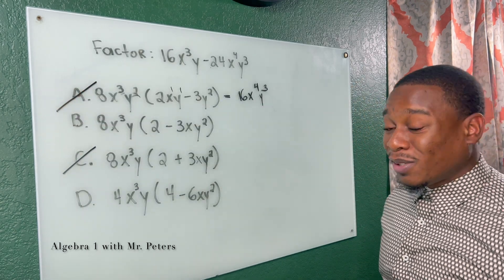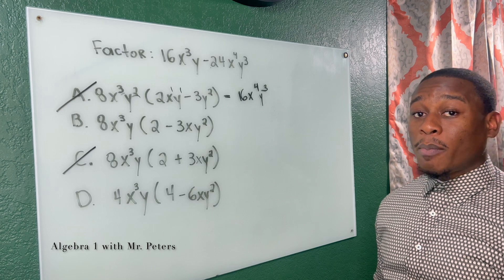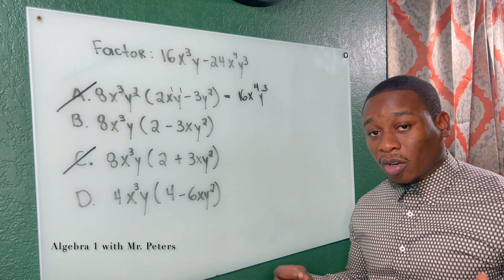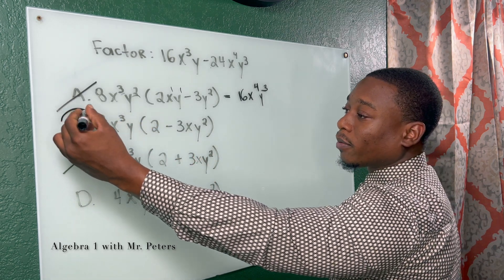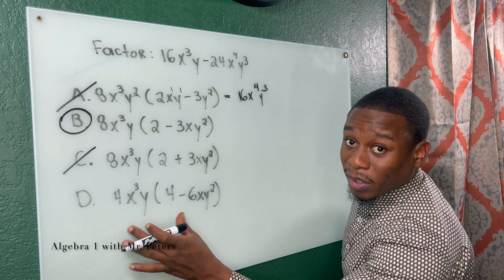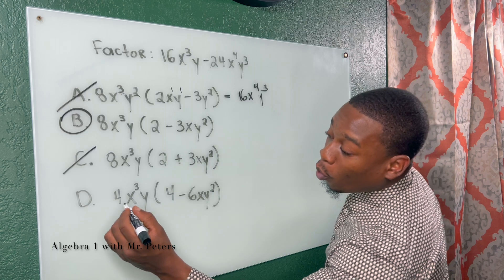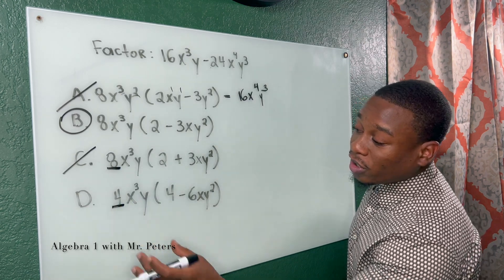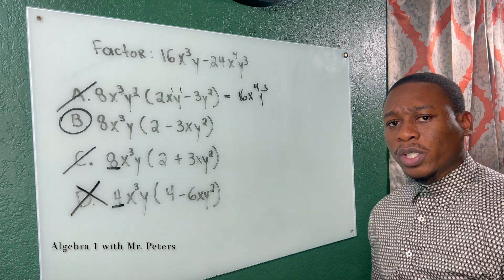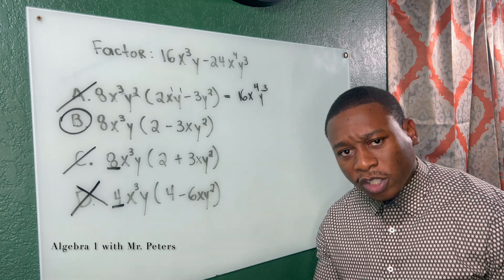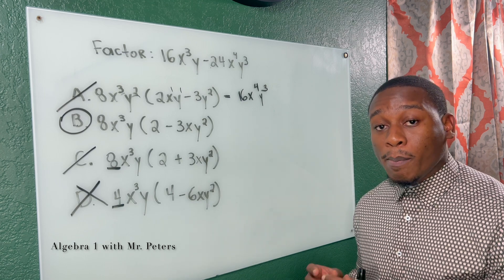Now we get to the answer choice B and D. But you guys know that the type of factoring we're doing right now is greatest common factor. So we have to take the largest number that goes into both those numbers. And as a result, my answer choice is B. This would give me the same exact answer once I distributed back. But the issue is 4 versus 8. The largest greatest common factor would be 8 and not 4.